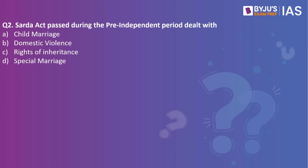Next practice question: the Sharda Act, passed during the pre-independence period, dealt with — child marriage, domestic violence, rights of inheritance, or special marriage? The answer is child marriage. As an assignment, please put in the comment section when the Sharda Act was passed and what was the specific scenario that led to its passing.